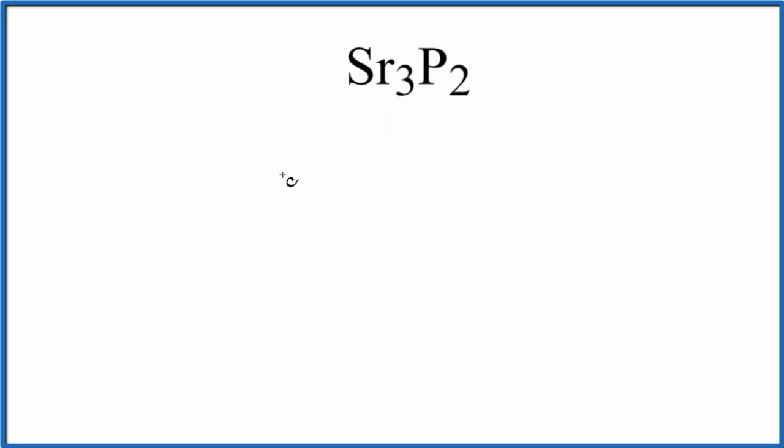So let's first write the strontium atoms here, just their symbols. Then let's write the phosphorus atoms. We have two of those.